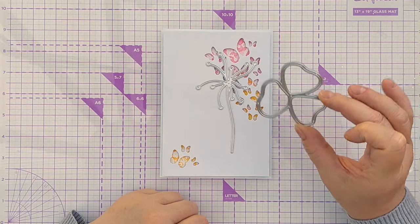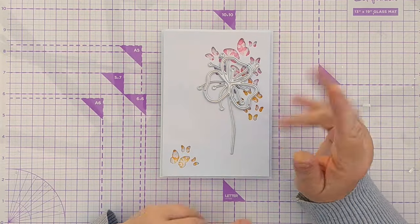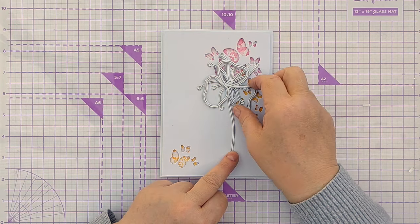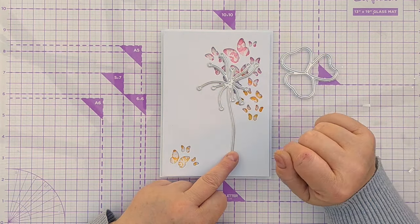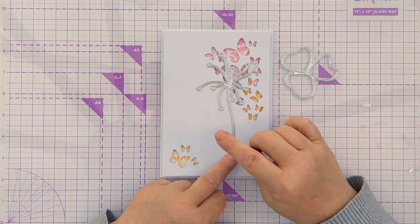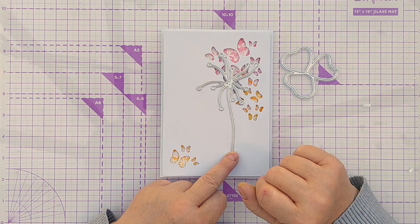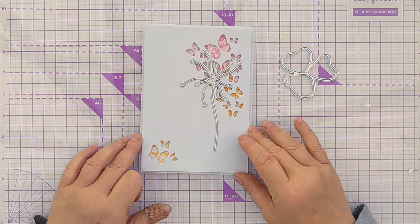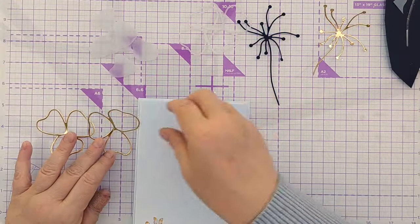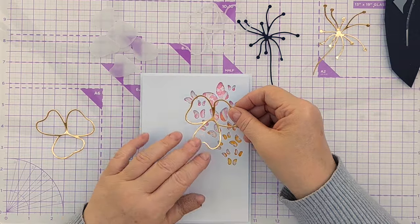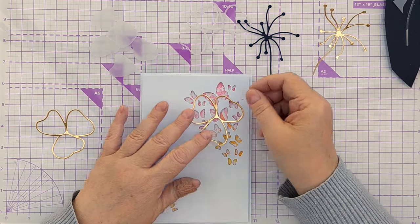To embellish this card I've got this Whimsical Flower die set. I'm thinking I'll cut the petals in vellum, maybe do two layers of those and then this I'm going to cut. I think I'll try it in gold and I'll try it in maybe black and we'll see what it looks like. So we get these little outlines. I think I like those in gold.